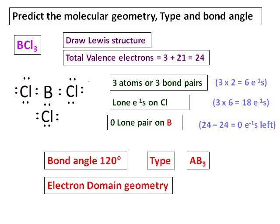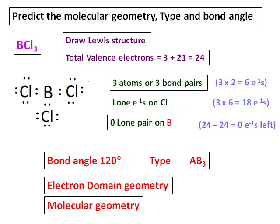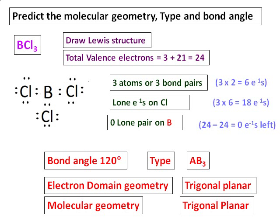The electron domain geometry, because it is an AB3 type, is trigonal planar. The molecular geometry is also trigonal planar because there is no lone pair on boron. The bond angle is the perfect trigonal planar bond angle of 120 degrees. It is the lone pair that changes both the molecular geometry and the bond angle.